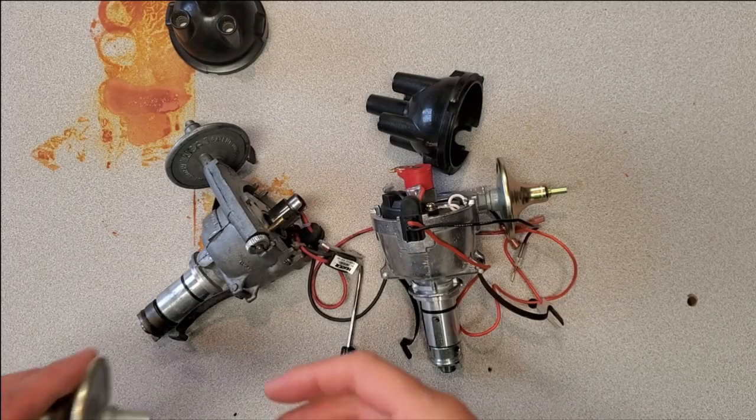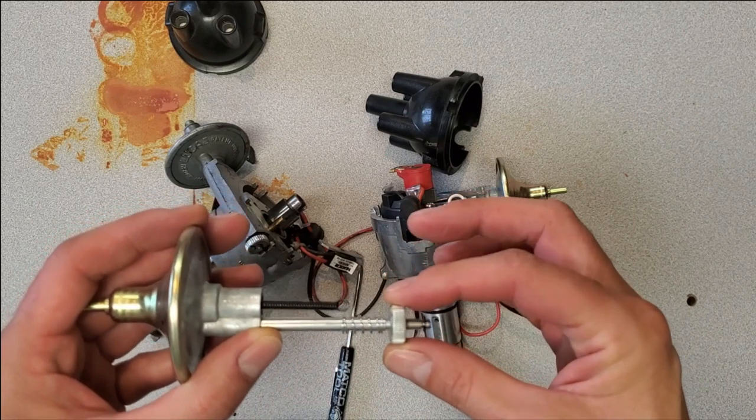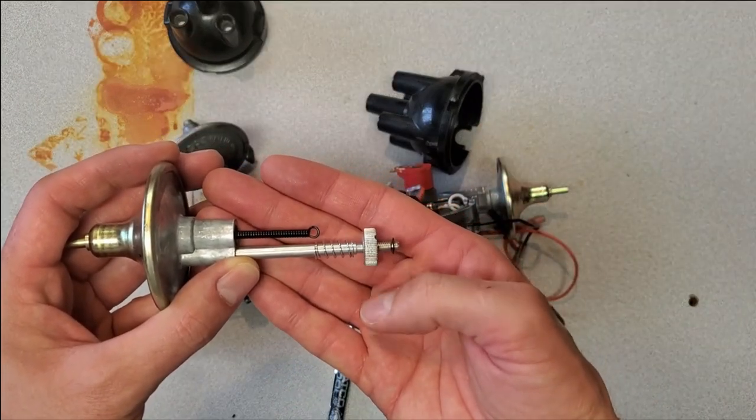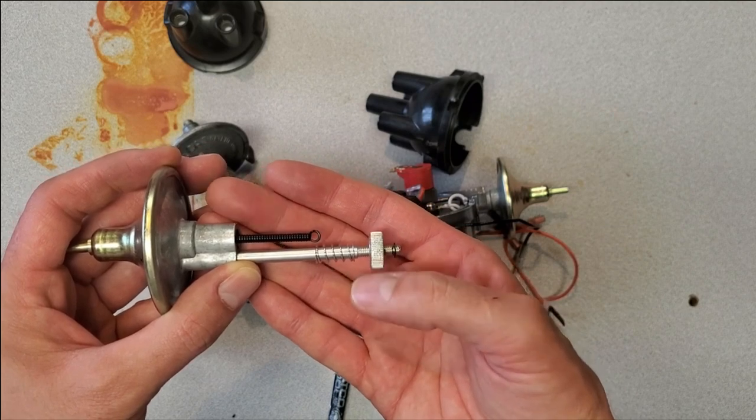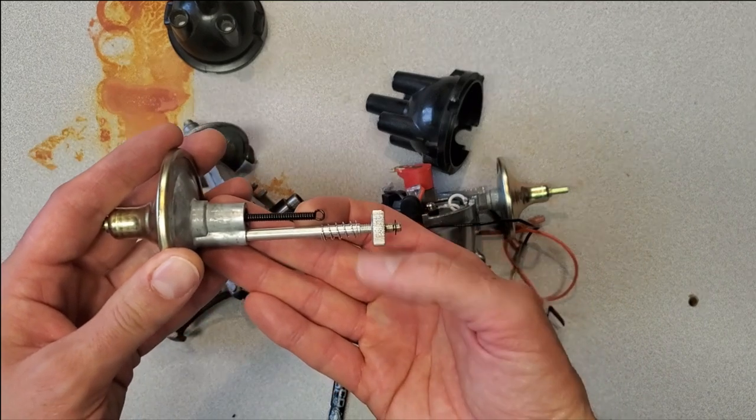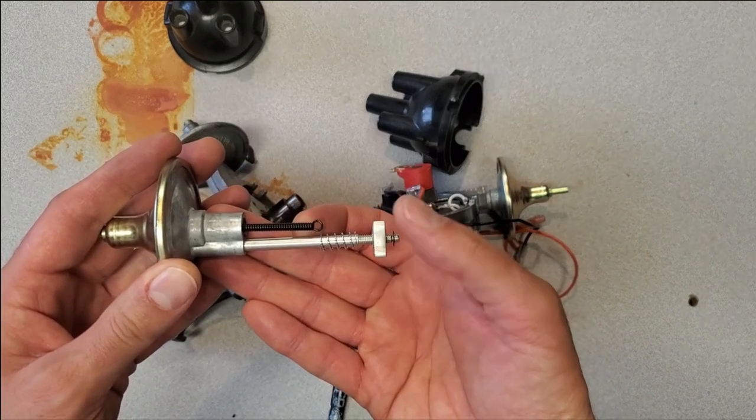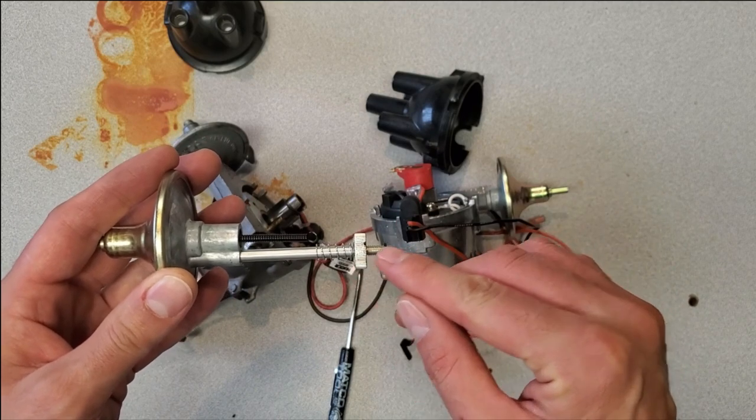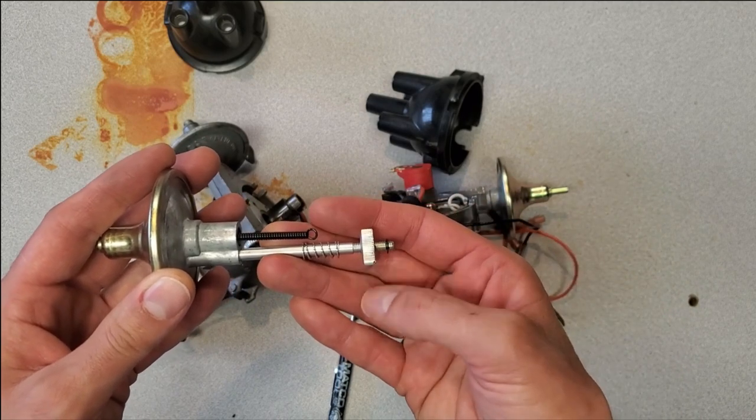Also, another problem is that the adjuster nut on these reproduction units sometimes is just seized or really difficult to turn. This is a replacement module for these distributors that I have here, but you can see how smoothly this nut turns. This is only because I ran a 10-32 tap across these threads and also the nut itself.